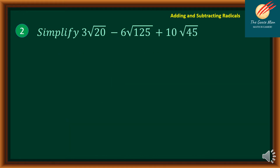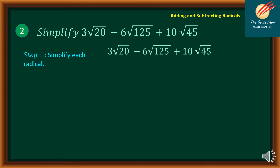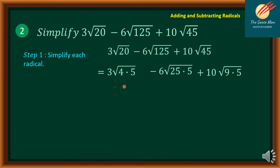Let's move on to problem number 2. Simplify: 3 square root of 20 minus 6 square root of 125 plus 10 square root of 45. We need to simplify each term. So we have 3 square root of 20 minus 6 square root of 125 plus 10 square root of 45. Look for the factors of 20 that include a perfect square: 4 and 5. For 125: 25 times 5, and for 45: 9 and 5.